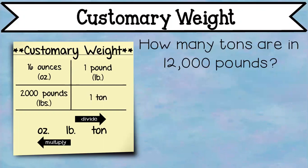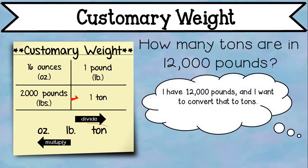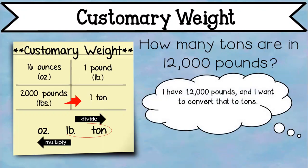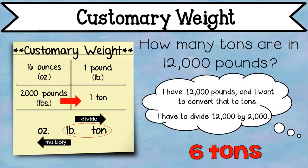Here's another one: how many tons are in 12,000 pounds? Going from pounds to tons, we divide: 12,000 divided by 2,000 equals six tons.